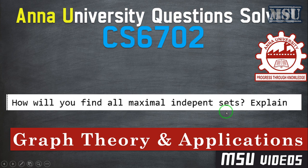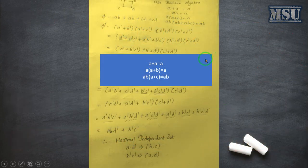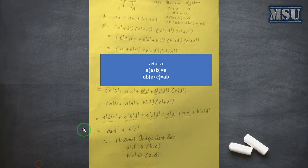So what is meant by independent set is, independent set is a set of vertices in which no vertices are adjacent to each other. Maximal means in a graph we have to maximize the number of vertices, that is what the maximal independent set. So here we have to use the concept of Boolean algebra.